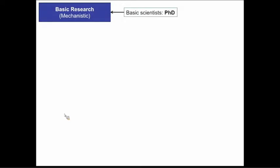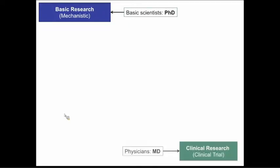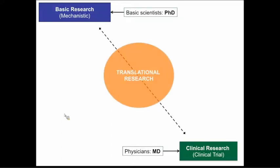The main idea behind translational research is to cover a gap that was very obvious until relatively recently. At one end of the spectrum, you have basic scientists doing mechanistic research trying to understand the basics of biology. At the other end, you have clinical research with physicians, with the paradigm being the clinical trial. There was very little communication between both. This concept of translational research tried to link both ends so that PhD scientists know what's needed in the clinical arena, and clinicians have an idea of what technologies from basic research can improve patient management.